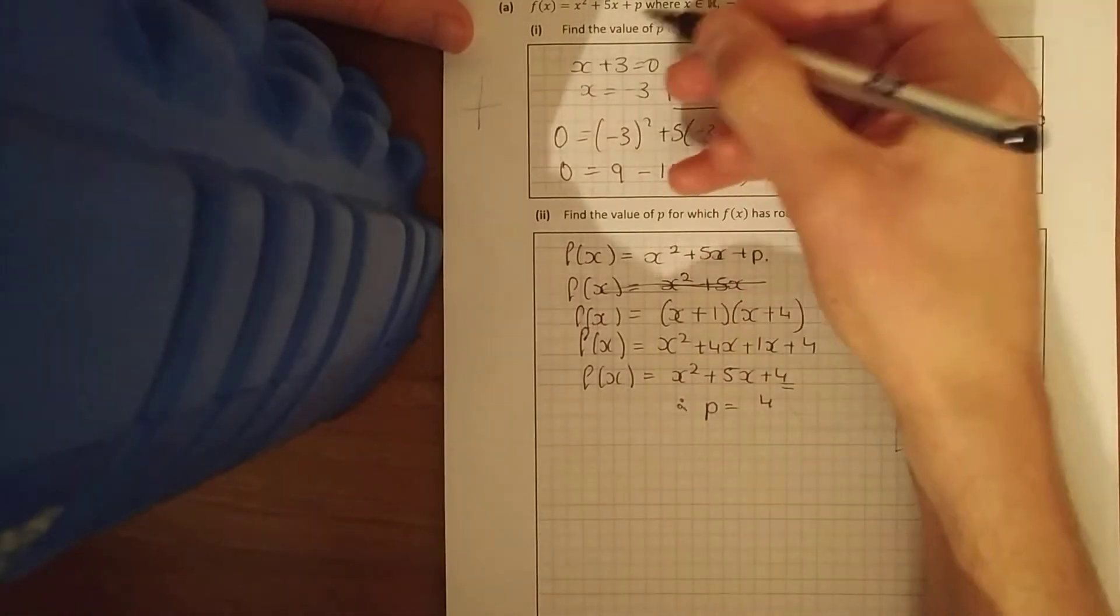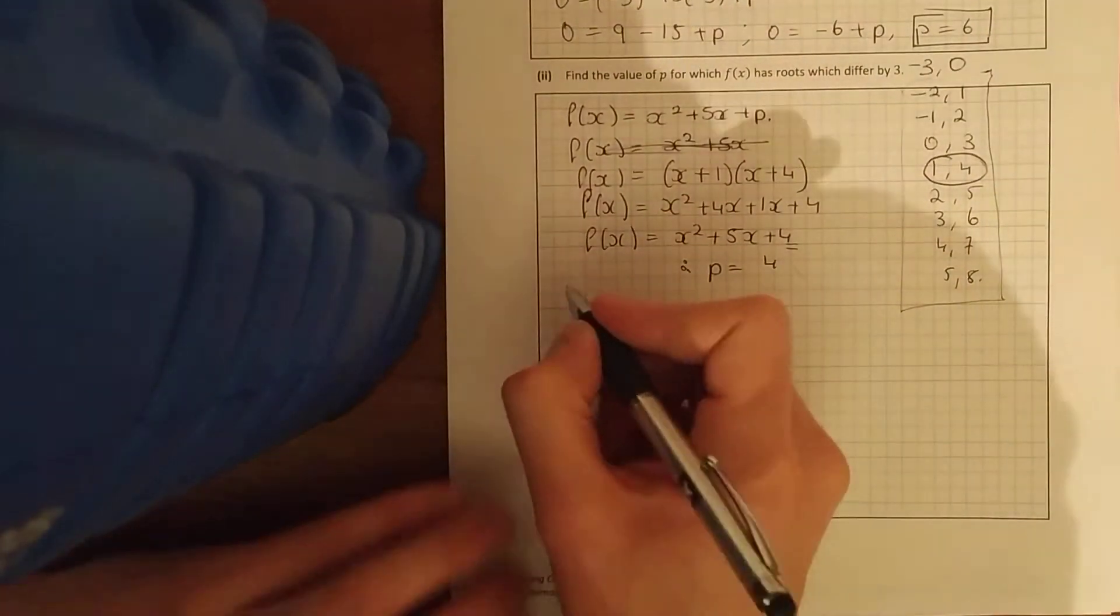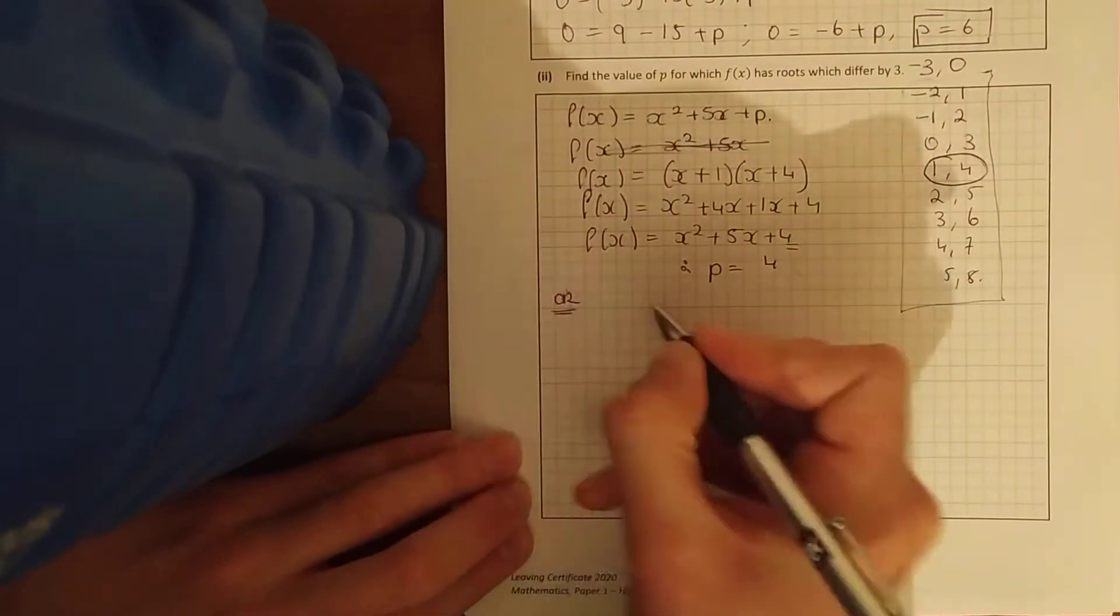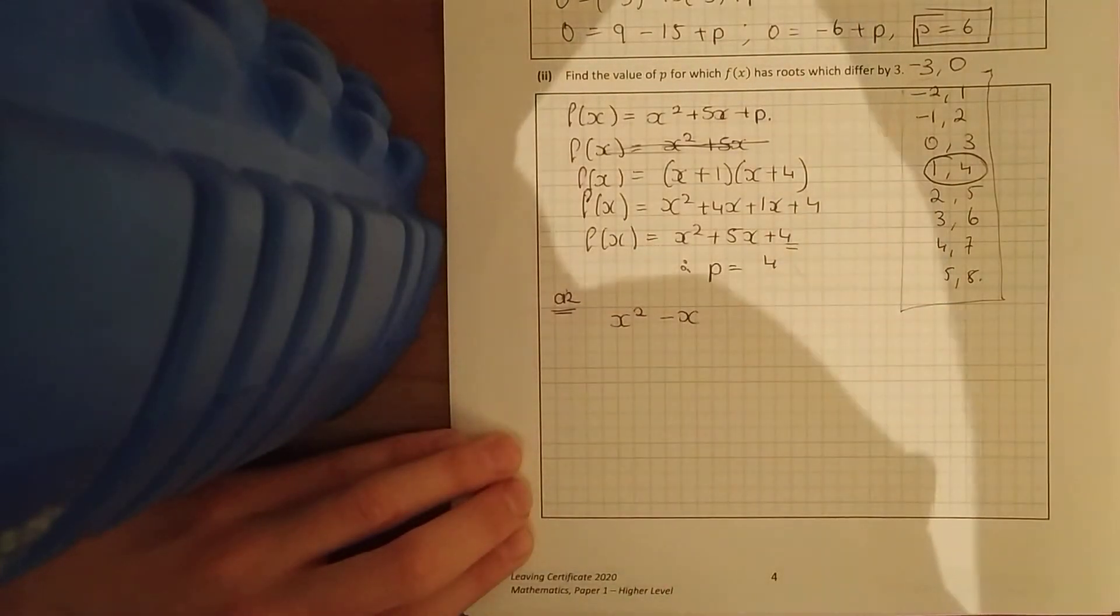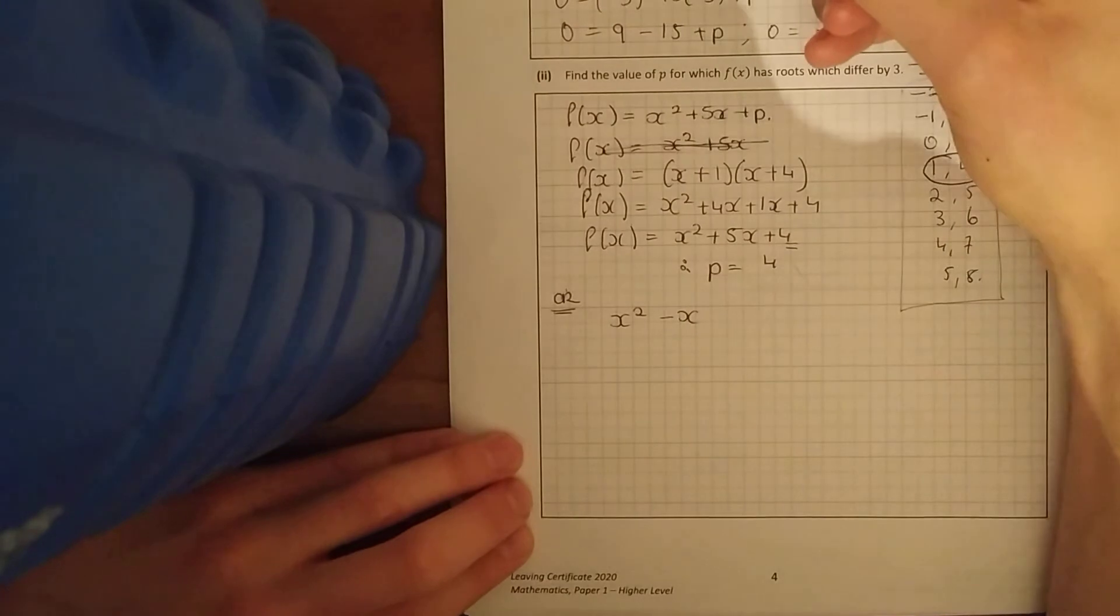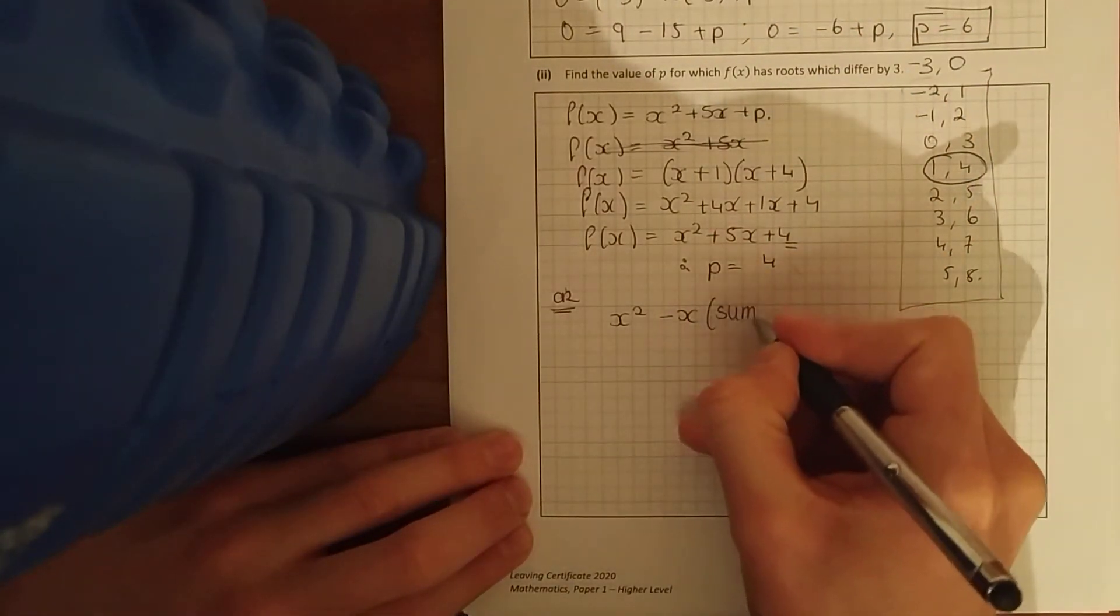So that means my value for p in that one is 4, because it's the number at the end. Maybe an easier way to do that is using your formula: x squared, or z squared a lot of times you see, but I'll use x because it matches up very nicely. The bit at the top matches up to this x squared minus x times the sum of the roots.